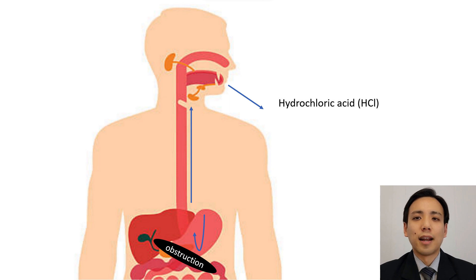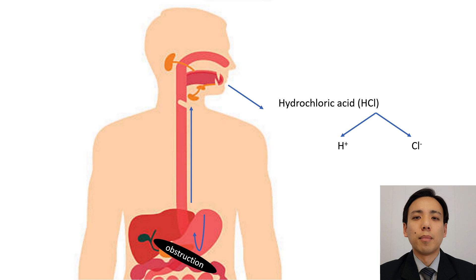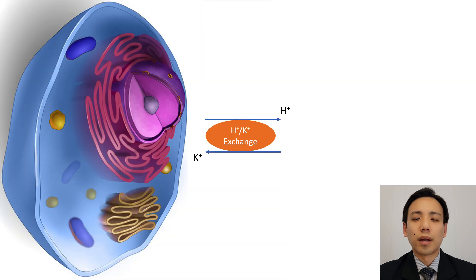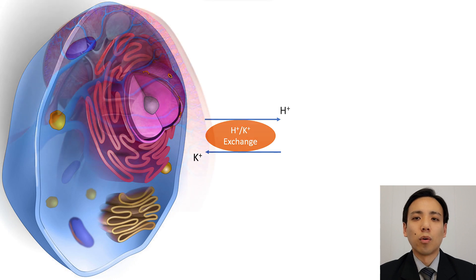This leads to the loss of gastric acid, which is hydrochloric acid, and hence the loss of chloride, resulting in hypochloremia, plus the loss of acid in the form of hydrogen ions, resulting in metabolic alkalosis. In an attempt to correct this alkalosis, cells in the body exchange intracellular hydrogen ions for extracellular potassium ions via the hydrogen-potassium exchange channels, resulting in hypokalemia.